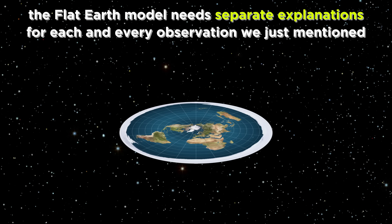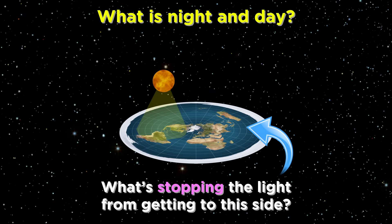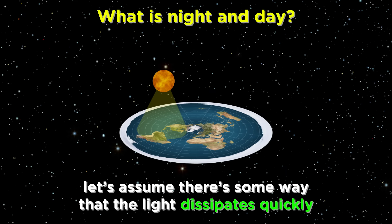In the flat earth model, all of these observations require their own separate explanations. What is night and day? If you try to place a luminous object like the sun above a plane like the flat earth, how does light reach half the plane and not the other half? Say you come up with a mechanism whereby light dissipates appropriately. How does this then fit with other observations? What are the seasons?